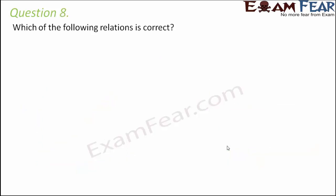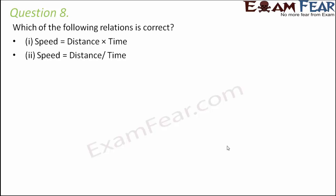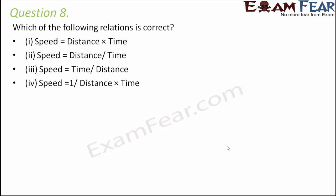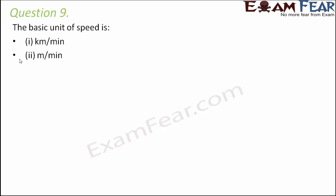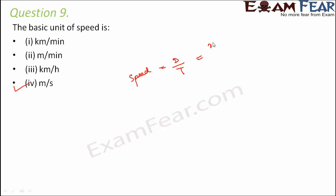Question number eight: which of the following relations is correct? Speed equals distance into time; speed equals distance by time; speed equals time by distance; or speed equals time? Speed is always distance per unit time, so the correct option is speed equals distance divided by time. Question nine: the basic unit of speed is meter per second, because the SI unit for distance is meter and the SI unit for time is second.